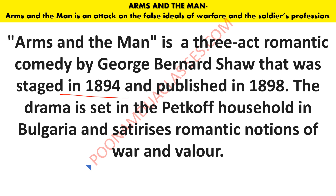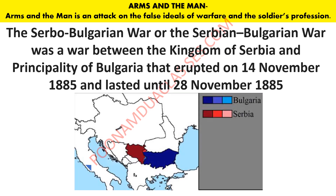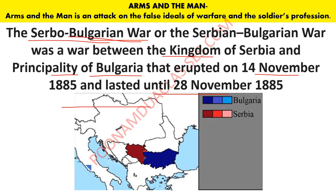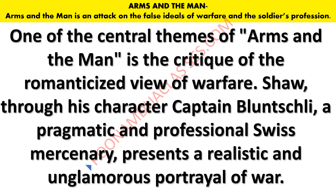For every novel, play, or poetry, remember what was published, what was written, the basic time setting, and the basic place setting. You should always mention the war — the Serbo-Bulgarian war, started in November. It was the war between the Kingdom of Serbia and the Principality of Bulgaria. If you don't mention this war, your answer will feel incomplete.